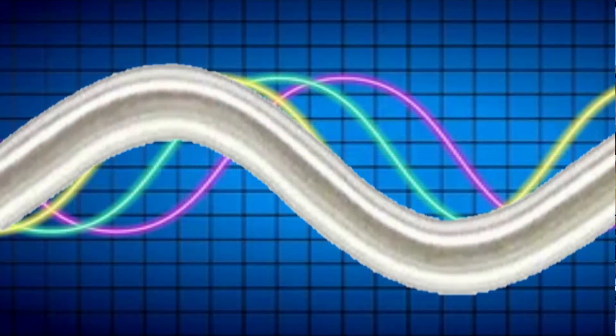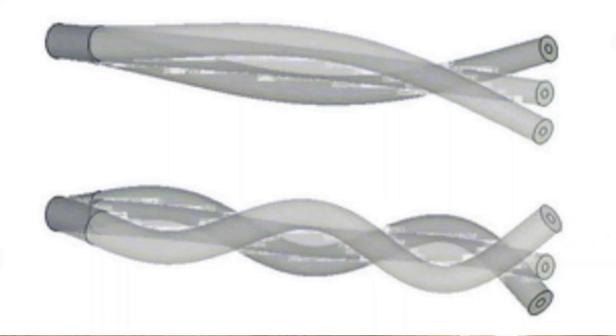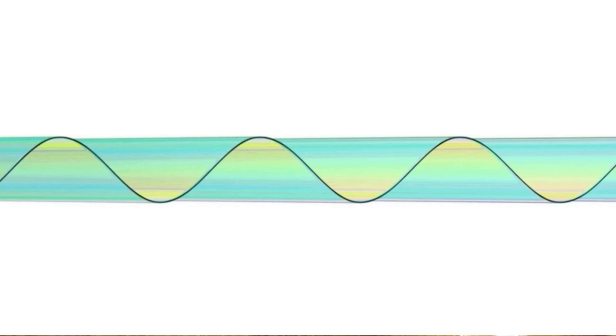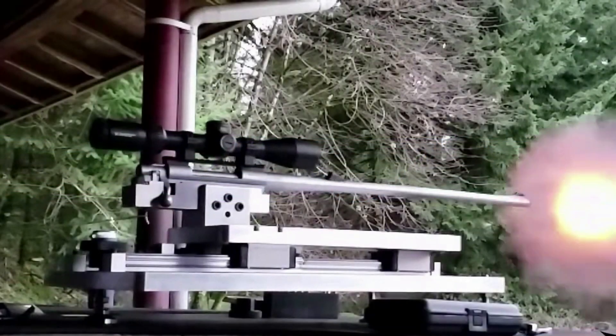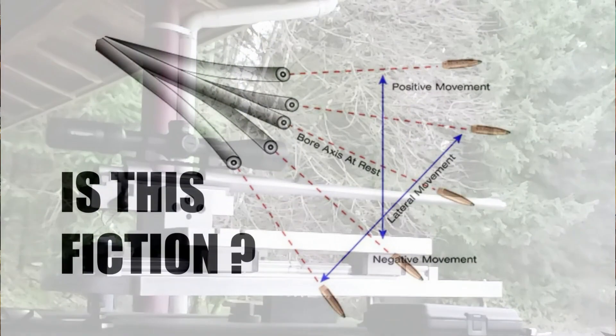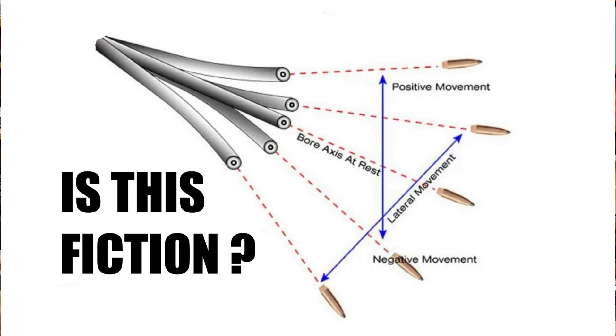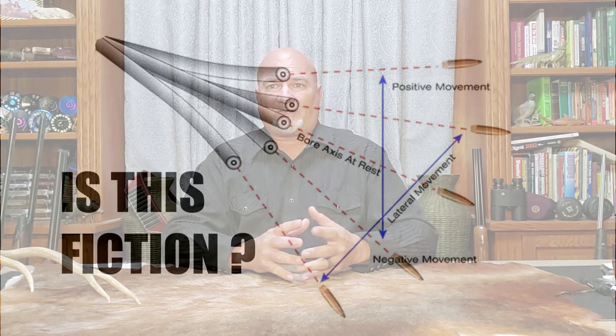Barrels were basically looked at like giant sine waves. Then scientists found something out. The barrel whip that we thought affected our shots happens after the bullet leaves the barrel. There is natural vibration that travels at the speed of sound while the bullet is inside the barrel, but that isn't the barrel whip that we were seeing on cameras. This means that finding a load that fits the whip of the barrel might have been fiction the entire time.